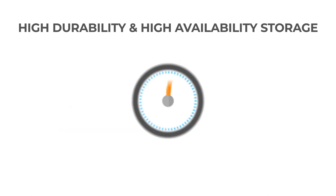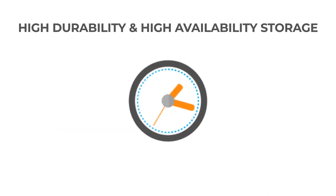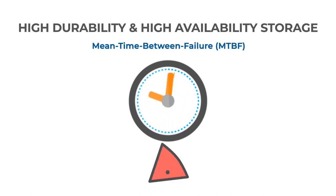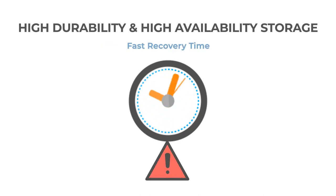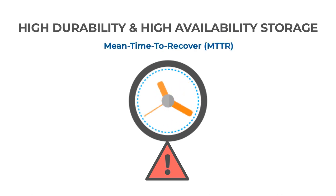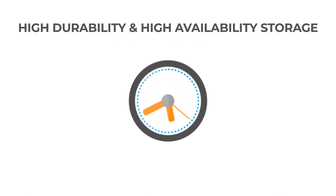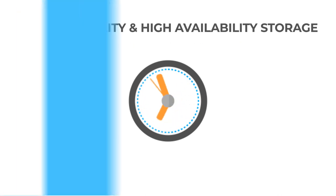To achieve a high number of nines, storage systems must have high mean time between failures, and when a failure occurs, the systems must have fast recovery times or low mean time to recover, leading to high mean time to data loss. To understand mean time to data loss, we must first understand failure domains.